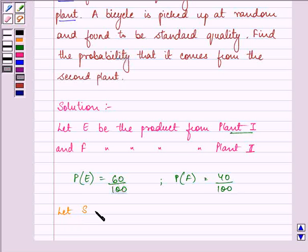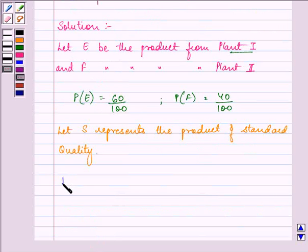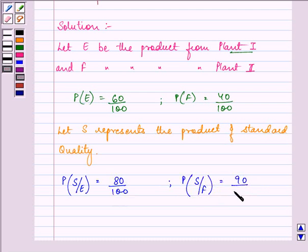let S represent the product of standard quality. For this, we are given that the product is of standard quality and is from plant 1 is 80%, and the product is of standard quality from the second plant is 90%.